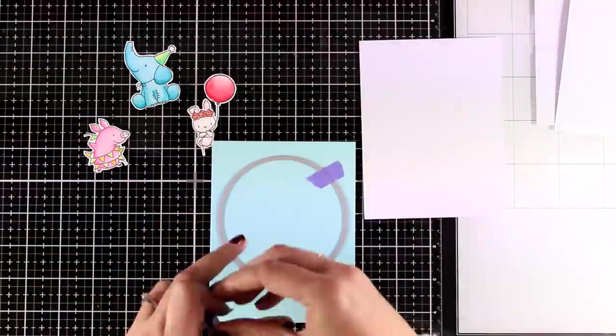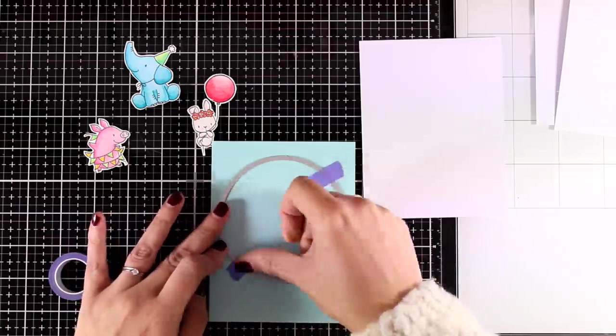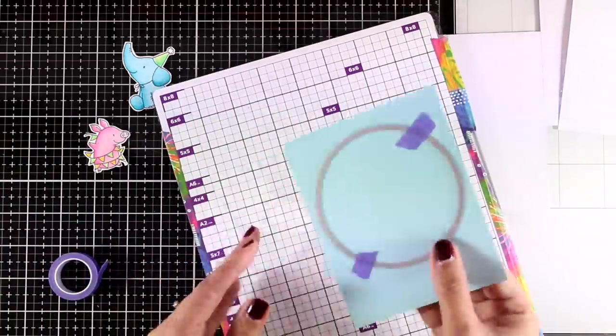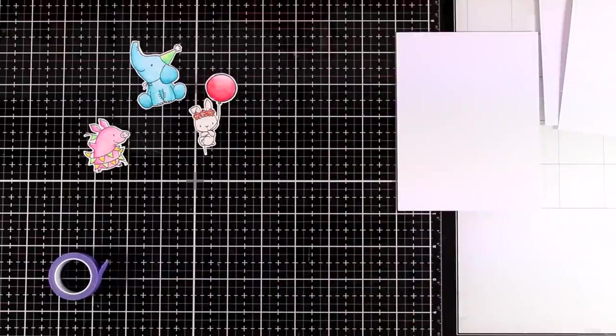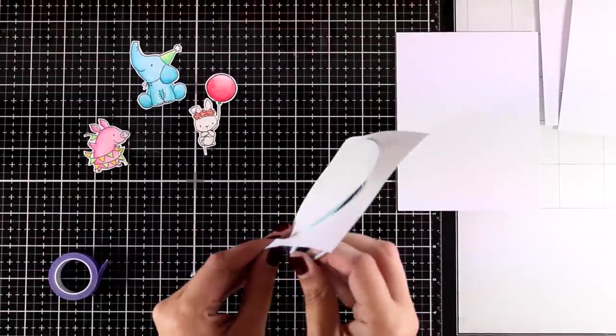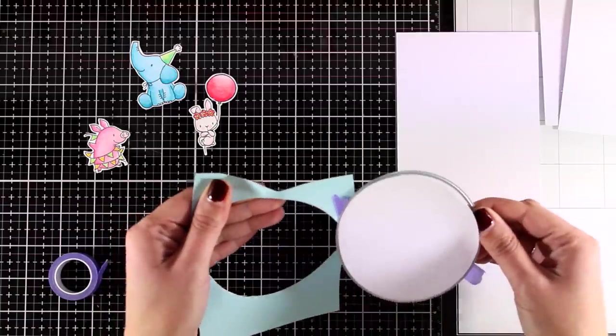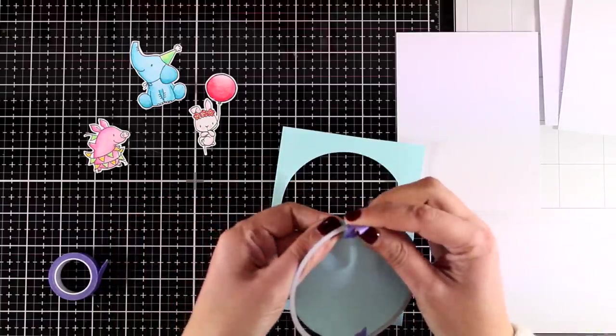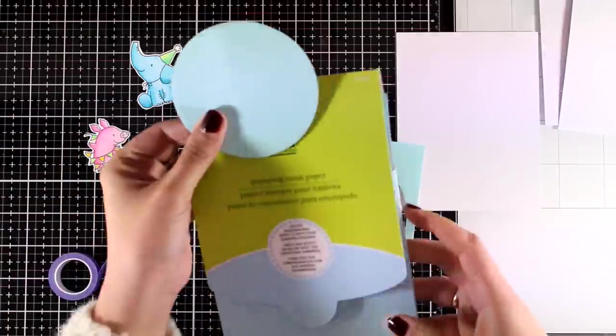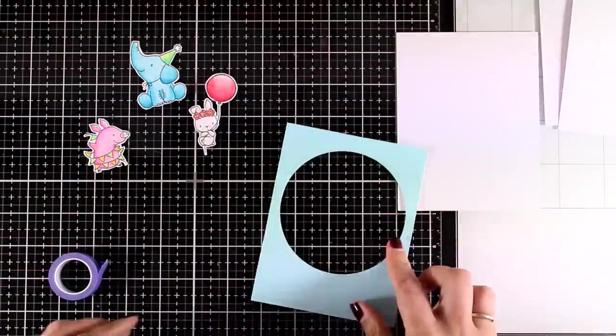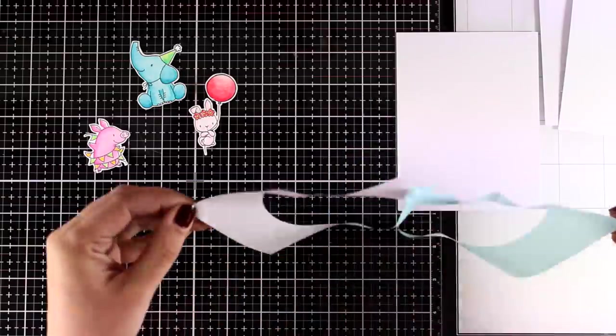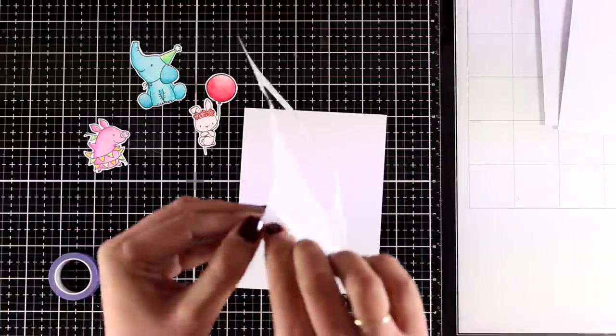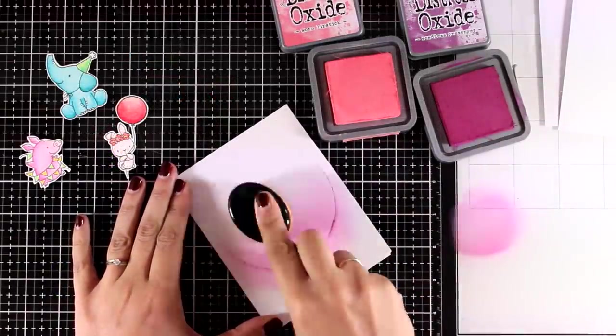Now it's time to turn all those lovely watercolor images into a card. For that, I am going to use the same design for all three of my cards. You can see that the same design can look completely different. Here I'm going to run a circle die through my die cutting machine. I used some masking paper, so I'm actually creating a mask which I'm going to use for all three of my cards. I'm going to peel off the backing and apply the mask on top of my four and a quarter by five and a half paper.